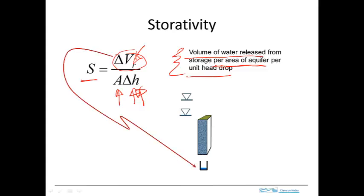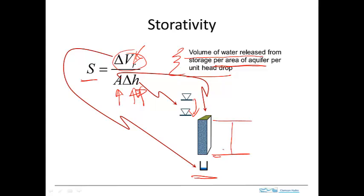The change in volume, or the volume released from storage from the previous example, divided by the change in head and the cross-sectional area — that green patch — is how the animated example translates into storativity. One important thing to recognize is that the area is taken over the whole aquifer thickness, so we're getting the volume released from storage over the full thickness of the aquifer per area of the aquifer.